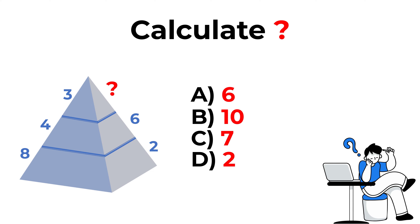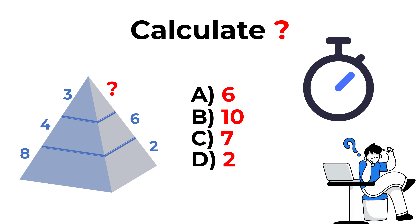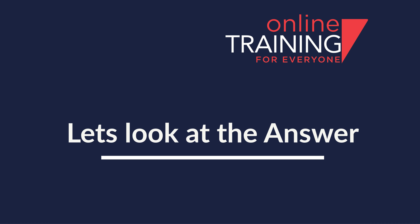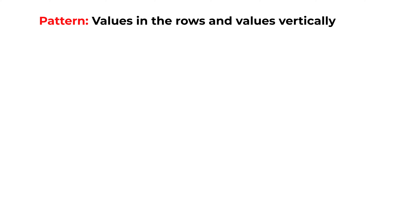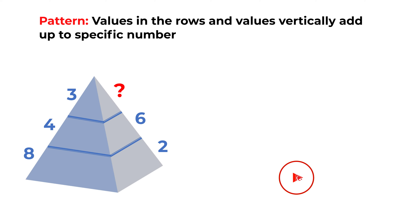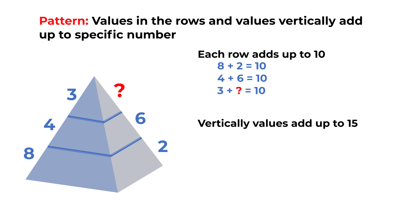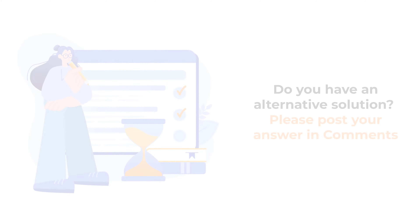Do you see the answer? Give yourself a little bit of time. For some of you this type of question might be easy, but for some it might require some thinking. The key to solve these types of challenges is to always look for patterns. Each row adds up to 10, and vertically values also add up to 15. So the correct answer is choice C, 7.